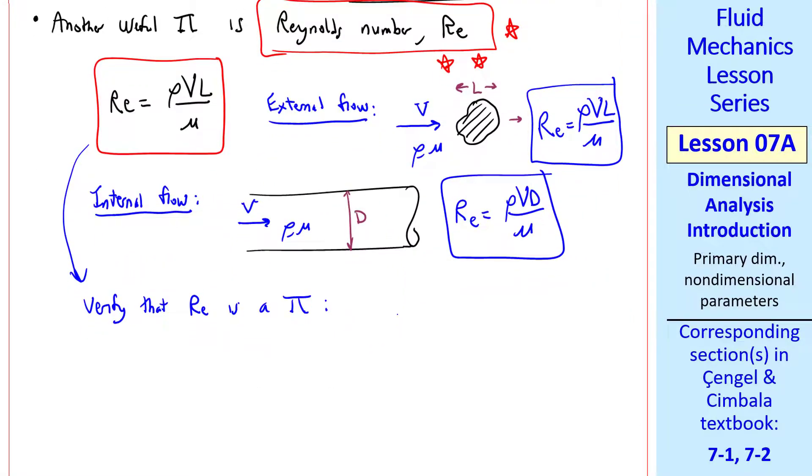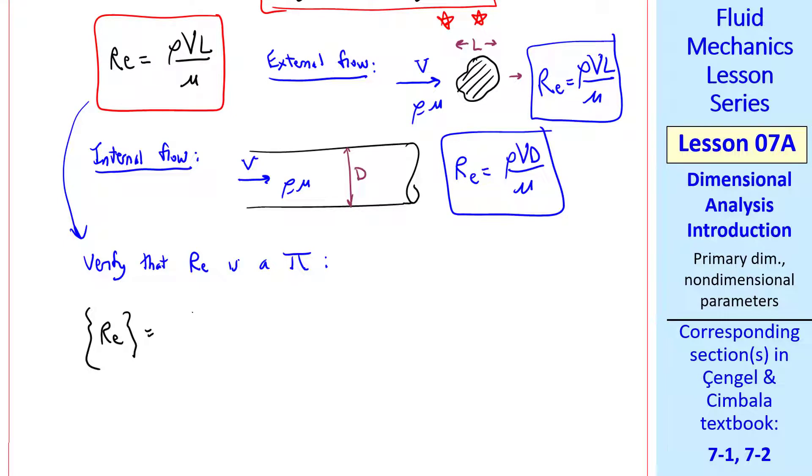Let's verify that Reynolds number is a pi. The dimensions of Reynolds number are the dimensions of density, speed, some characteristic length, and viscosity. By the way, if you don't know the dimensions of some property like viscosity, you can look up some values of viscosity in tables, and knowing the units, you can figure out the dimensions. Here, mass cancels. Three lengths in the bottom cancel three lengths on the top, and the T's cancel, so Reynolds number is indeed a dimensionless parameter.